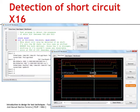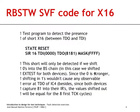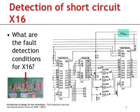The reason is that the zeros being shifted in will create the fault detection condition at clock cycle 9.